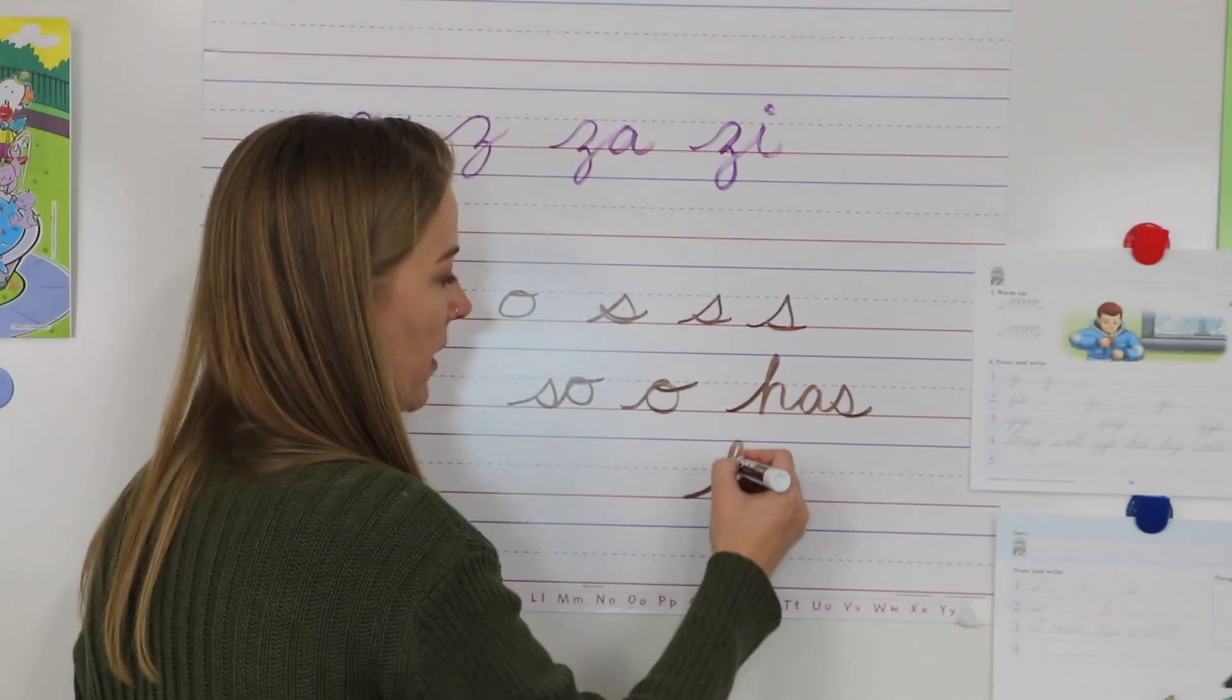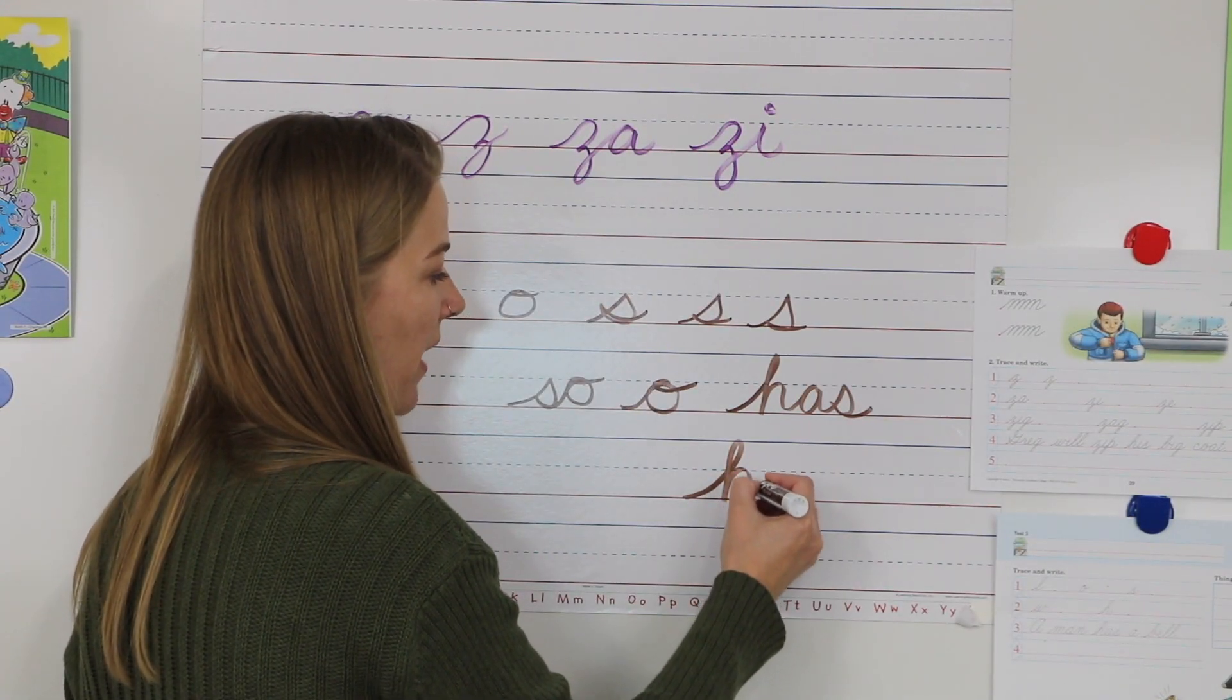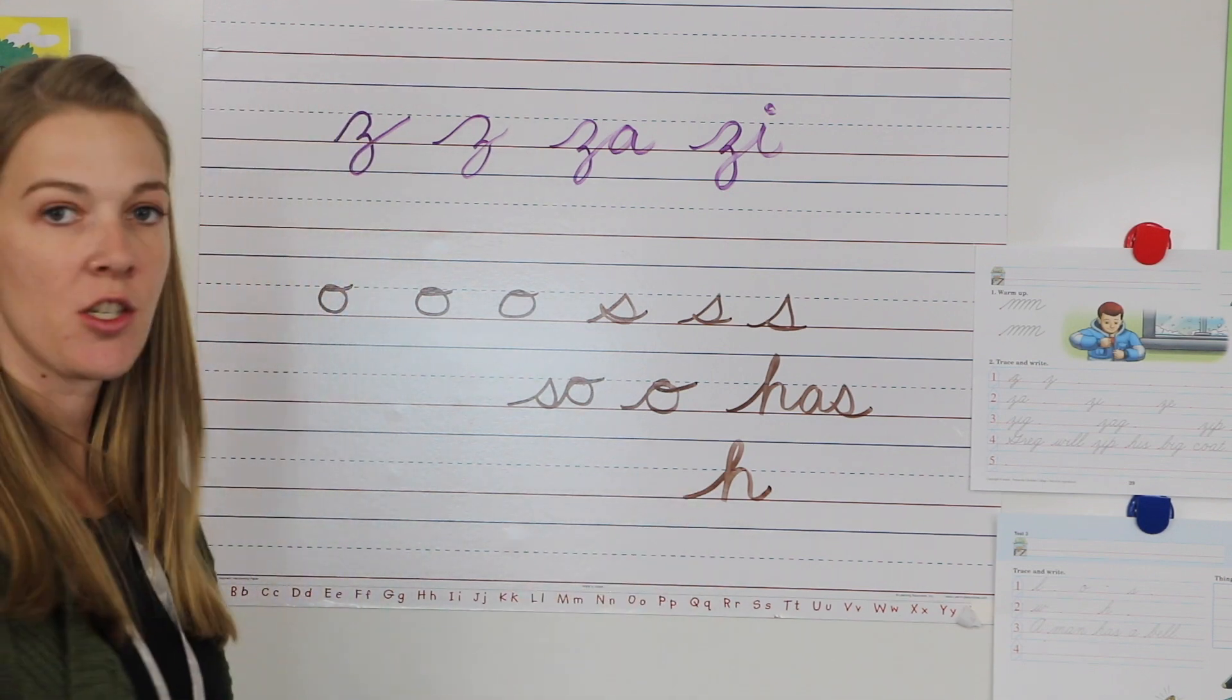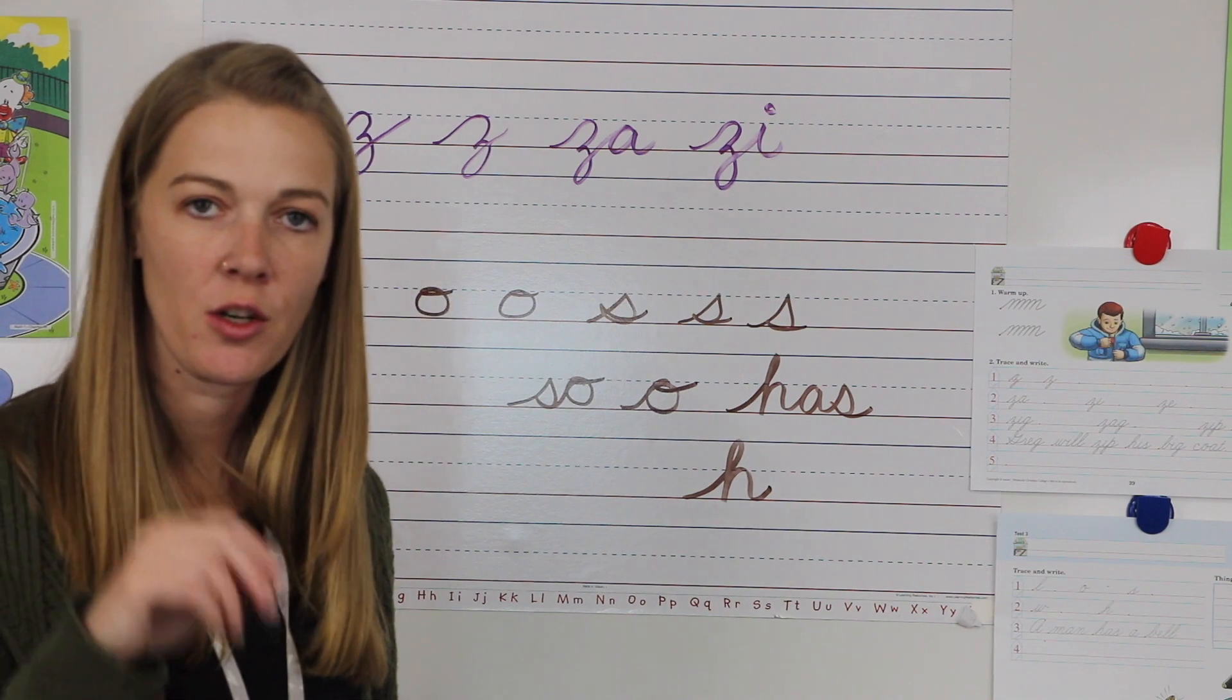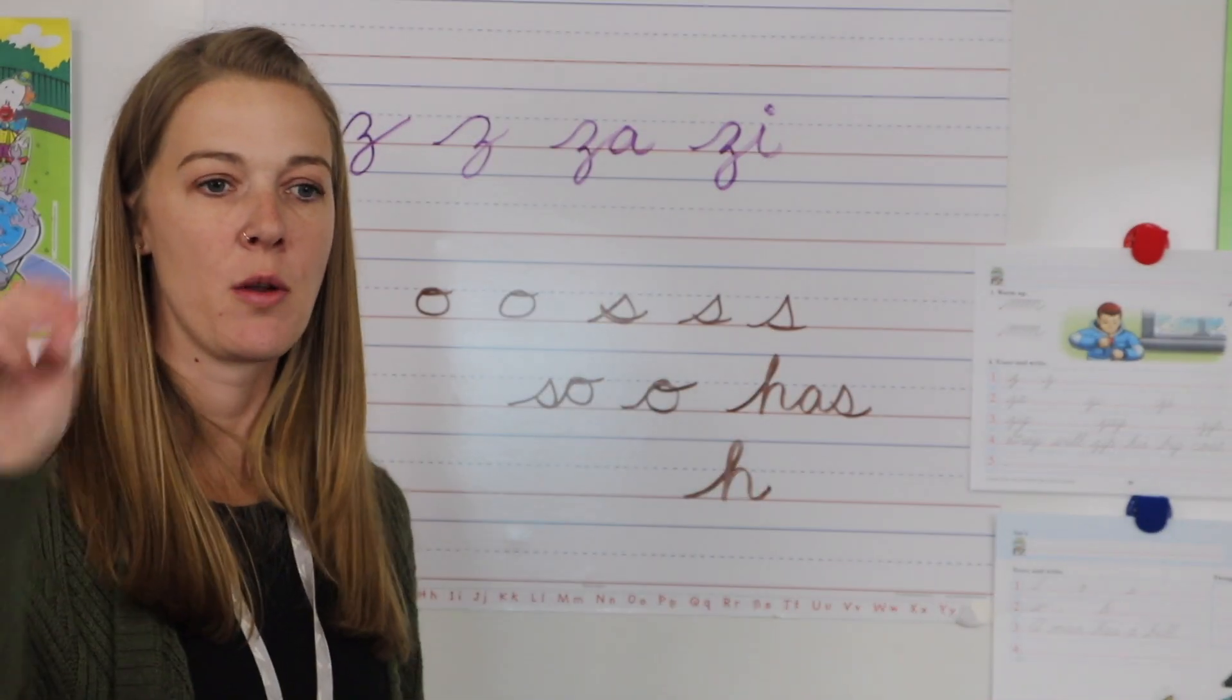You loop backwards, come down, trace back, and do your H. Okay, so just make sure you're really paying attention to where your pencil is and which direction you're going with your movement.